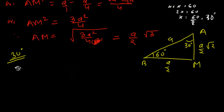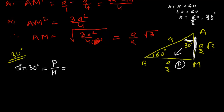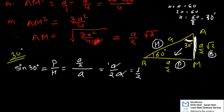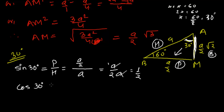Let's first find the ratios for 30 degrees. What is the value of sin 30°? Sin is always perpendicular upon hypotenuse. Our reference angle is 30°, so the side opposite to it is perpendicular, which is BM = a/2. The hypotenuse is AB = a. So sin 30° = (a/2) / a = 1/2. The value of sin 30° is 1/2.